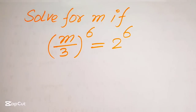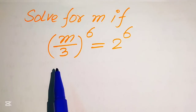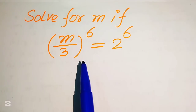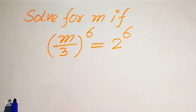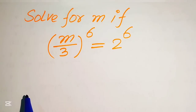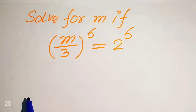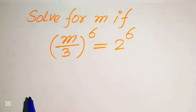Hello everyone, welcome to solve this nice math Olympiad algebra problem. Here we have m over 3 to the power of 6 equals to 2 to the power of 6, and we will solve this problem for all the values of m.